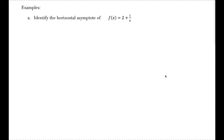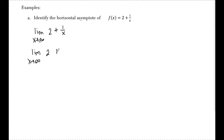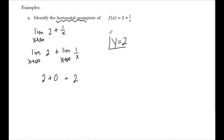Part A: identify the horizontal asymptote of f(x) = 2 + 1/x. I'm first going to look at the limit as x approaches infinity of 2 + 1/x. Since I have two separate terms, I can split this using limit laws: the limit as x→∞ of 2, plus the limit as x→∞ of 1/x. The first limit is just 2, and since the degree of the denominator is greater, the second limit approaches 0. So the limit is 2, meaning the horizontal asymptote is y = 2.